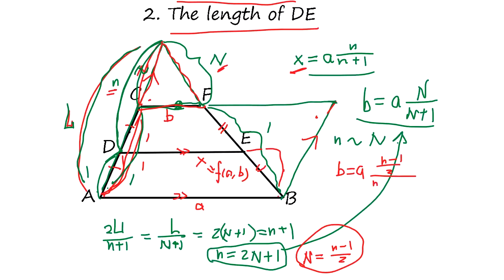...n minus one, 2 plus 1, multiply 2, so n minus 1 over n plus 1. Okay, so that's the relationship. B equals A times n minus 1 over n plus 1.